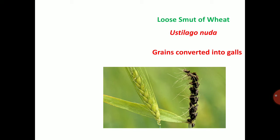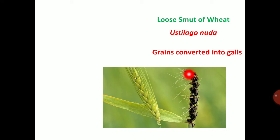Smut mainly infects the grains. Looking at the left side photo, you can see healthy grain. In case of the right side, black color smut spores are present — it looks like black powder. When the infected head or inflorescence is seen, the black color powdery mass is covered by a thick peridium, which acts as an outer wall. Entirely it is called as galls. Grains converted into galls is called smut. These galls contain black color smut spores.